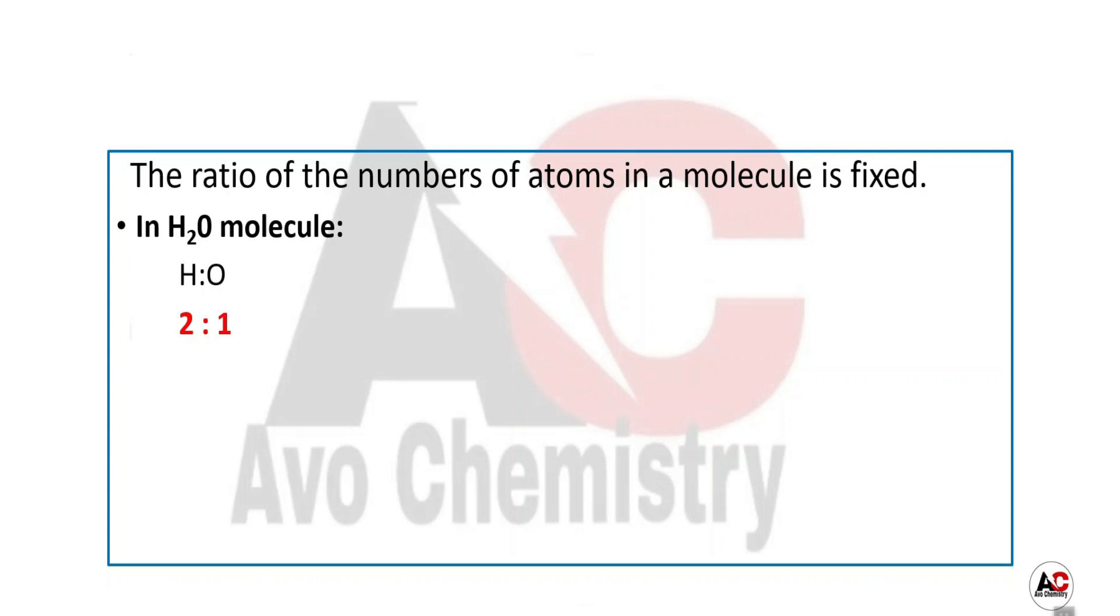If the ratio is changed, the molecule will be changed. For example, in a water molecule H2O there are total 3 atoms - 2 hydrogen and 1 oxygen.